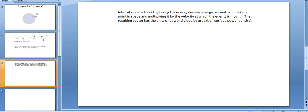Intensity can be found by taking the energy density, energy per unit volume, at a point in space and multiplying it by the velocity at which the energy is moving. The resulting vector has the units of power divided by area.